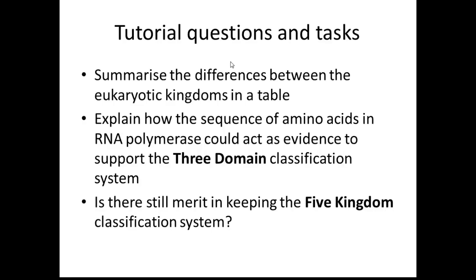Two tutorial questions and tasks. Number one: summarise the differences between eukaryotic kingdoms in a table. Number two: explain how the sequence of amino acids in RNA polymerase could act as evidence to support the three domain classification system. And a third, more philosophical question: is there still merit in keeping the five kingdom classification system? Thank you for listening — I hope that's helped, and I'll see you soon.